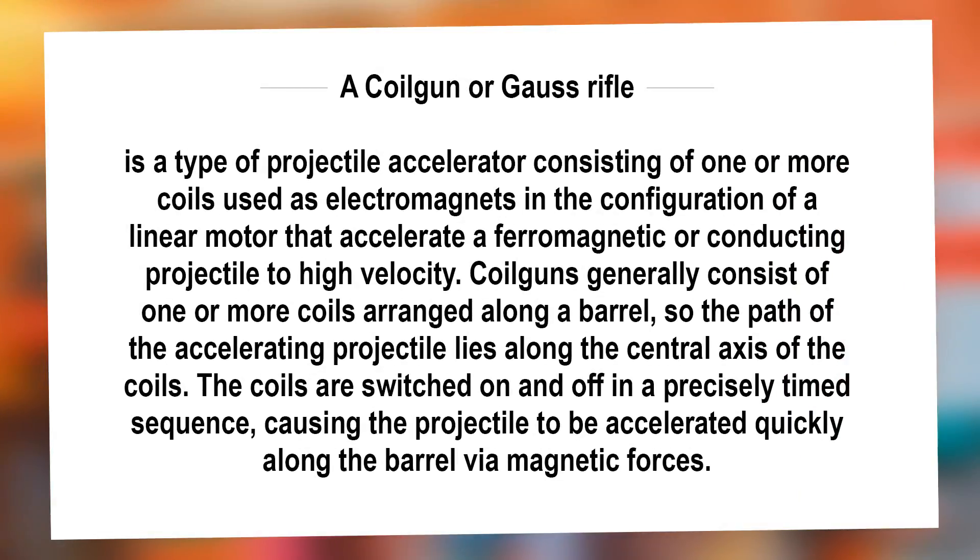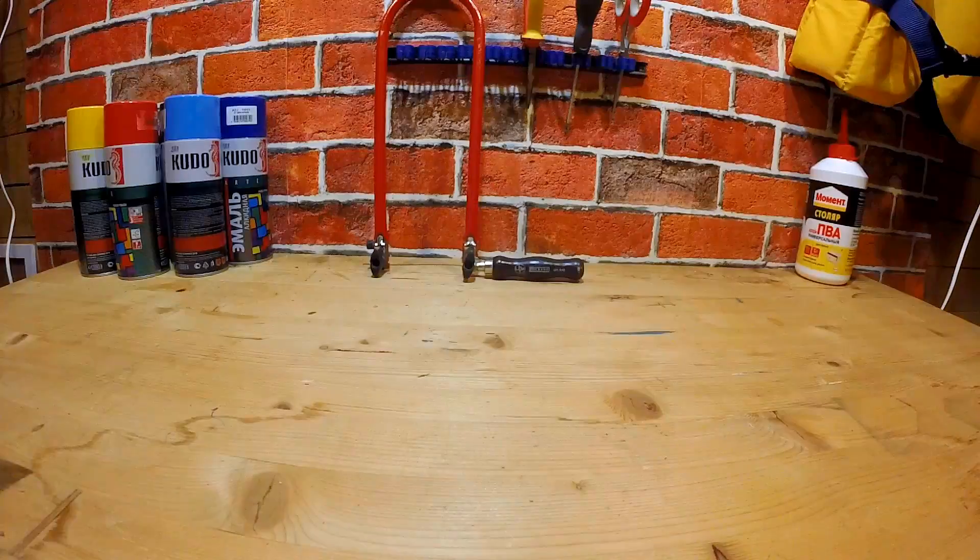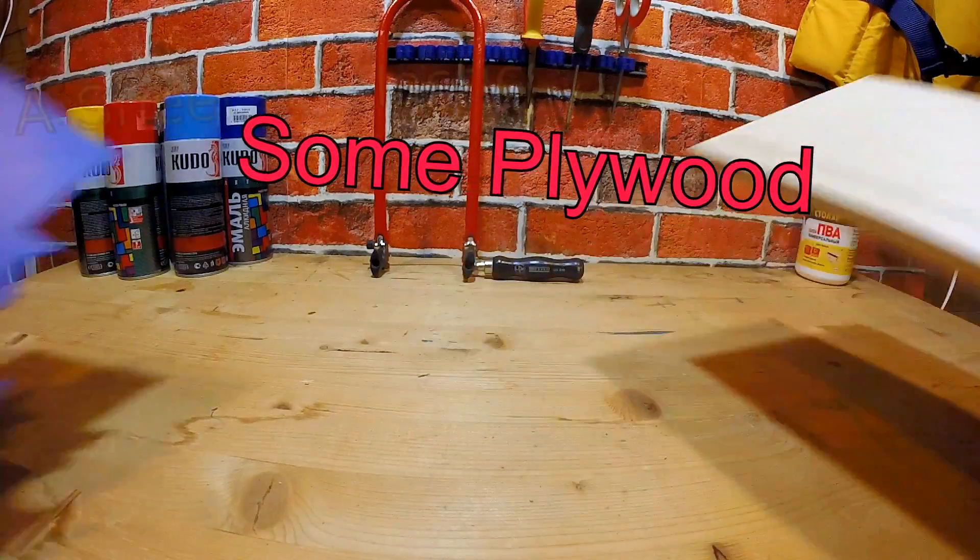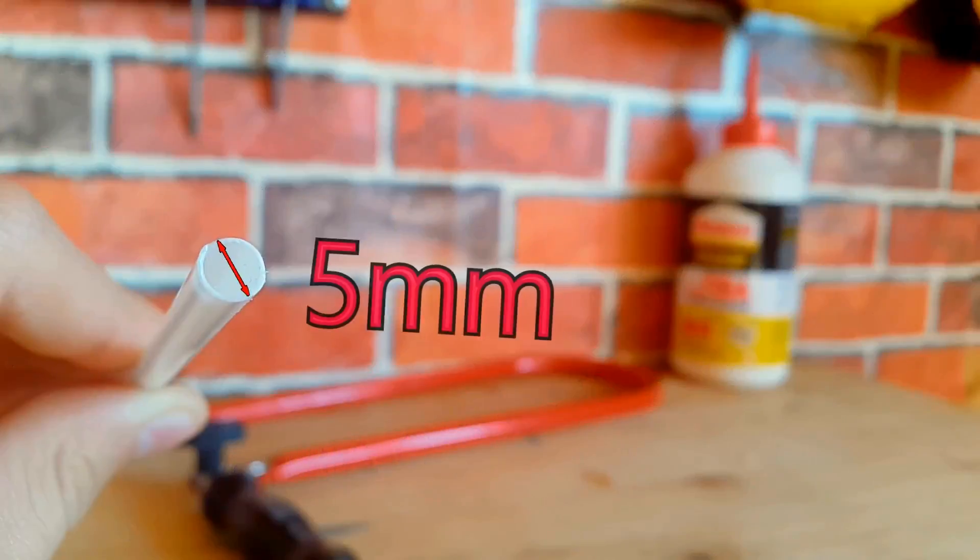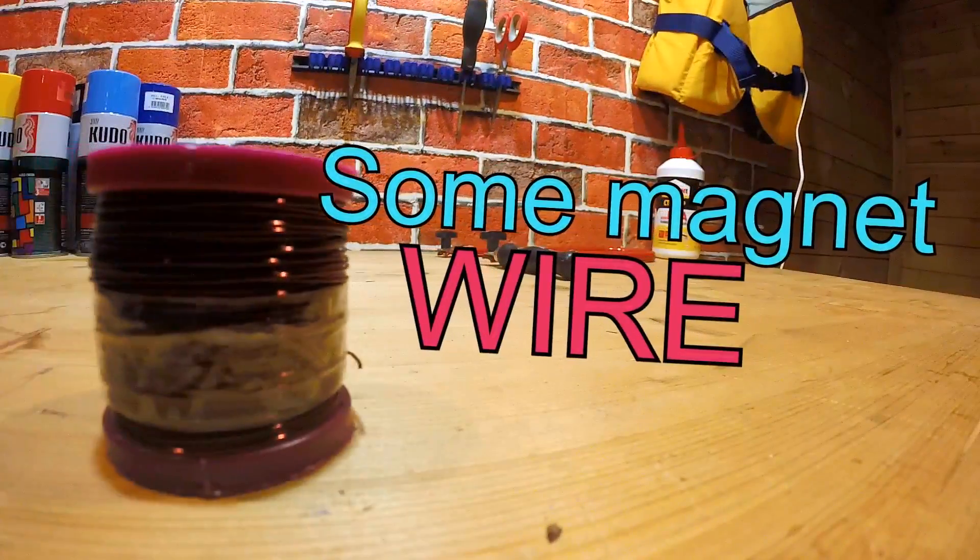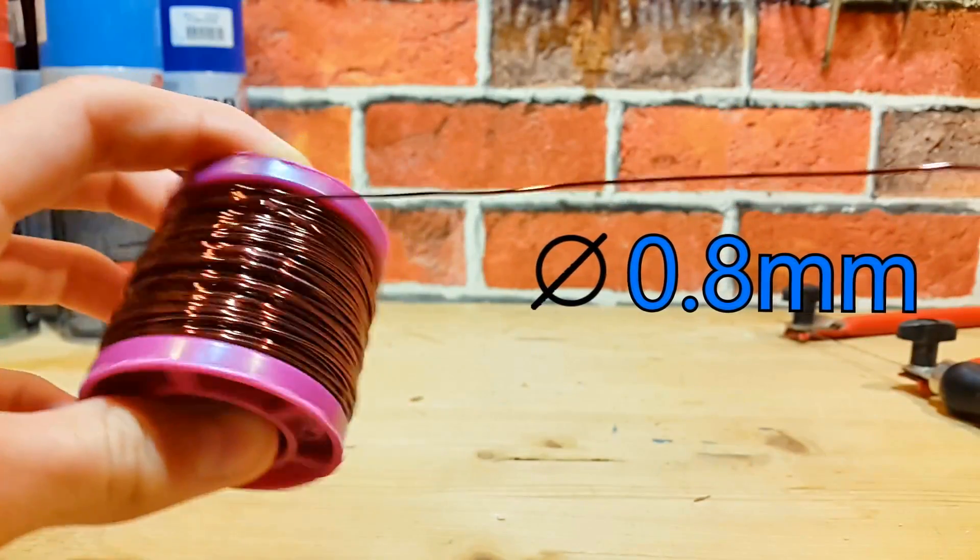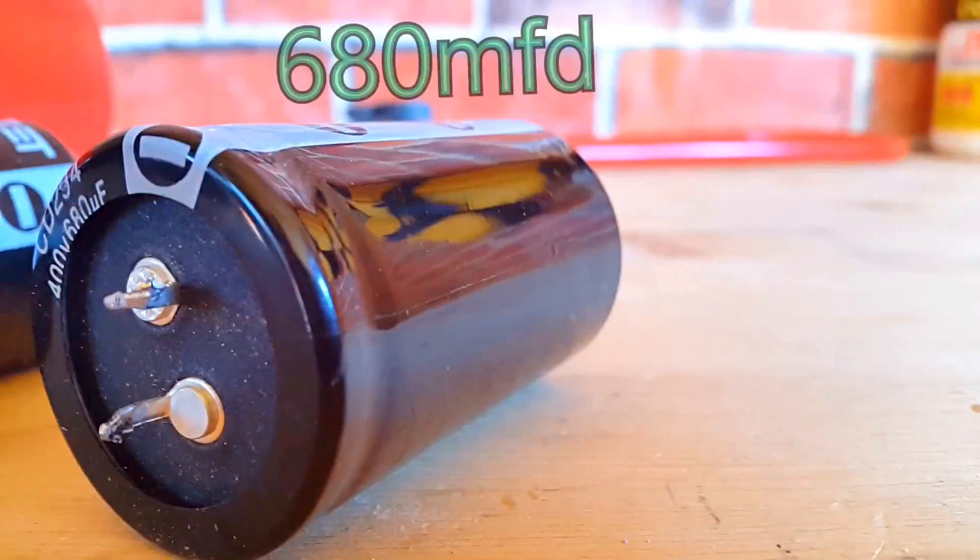Today I'm going to make a real Gauss rifle. To make it I'll need some plywood, a sheet of plastic, a juice tube, some magnet wire for the coil, and of course some capacitors.